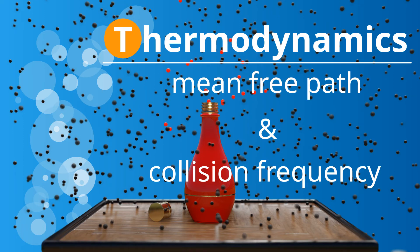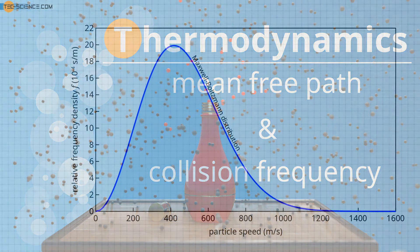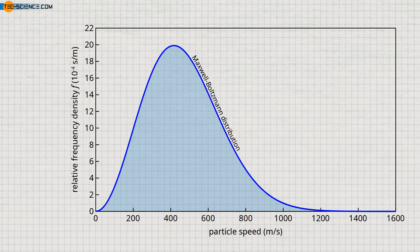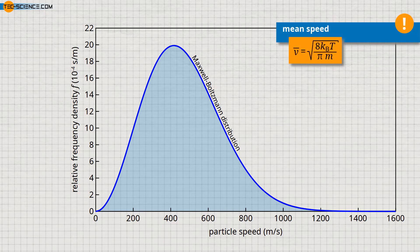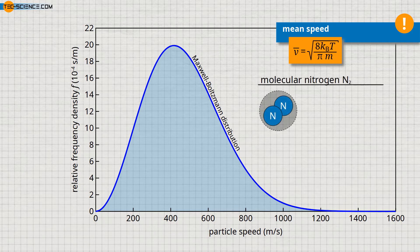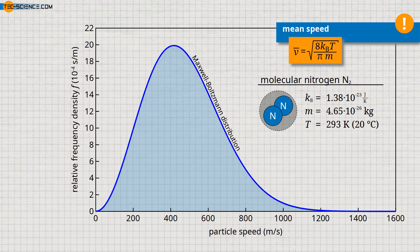Mean Free Path and Collision Frequency. In the video on the Maxwell-Boltzmann distribution it was shown that the mean speed of the molecules of an ideal gas can be determined with the given formula. This formula can be used, for example, to estimate the mean speed of air molecules. Since 78% of air consists of nitrogen, the average speed of the nitrogen molecules is to be calculated. Such a nitrogen molecule has a mass of 4.65 × 10⁻²⁶ kilograms. At a room temperature of 293 Kelvin this results in a mean speed of about 470 meters per second.